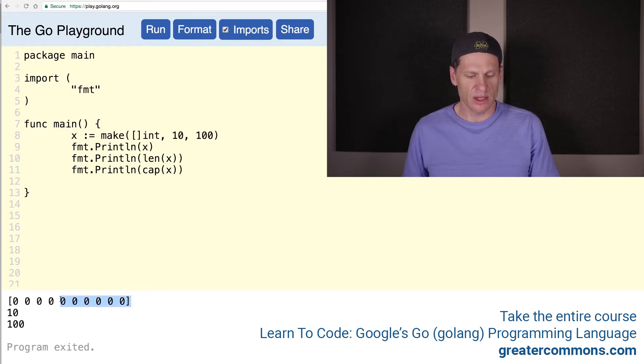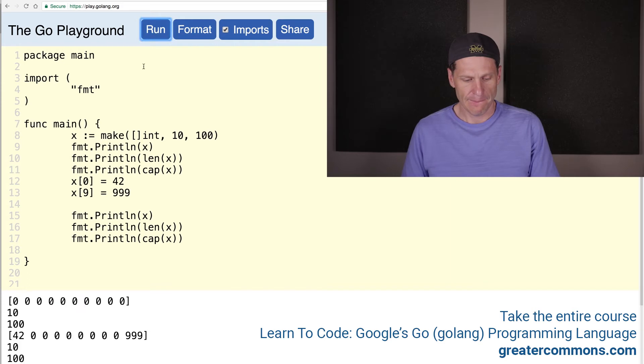So here is using make. And we have already allocated values to the index positions through 10. The length of our slice is 10. And we have 100 spots in the underlying array to use. So that's what that means. And so if we wanted to, we could start doing values to all of those positions. Like position 0 could be 42. And position 9, right? Because we have 10. So it's a 0 base index. So we go up through 9. It can be 999. And then we could print all that out again. And we have 42 there. We have 999 there. And this is through 10.